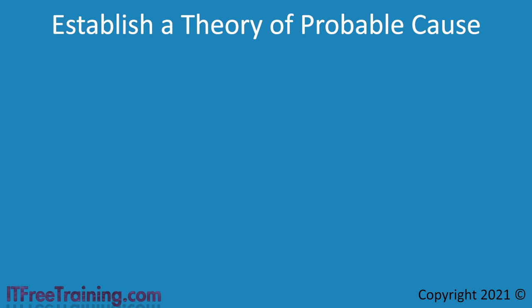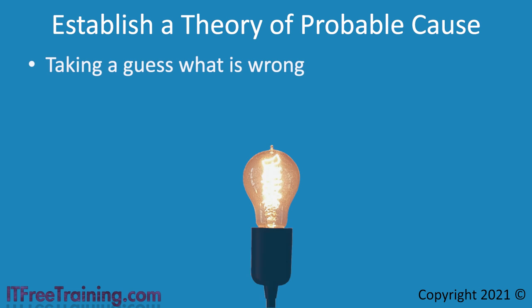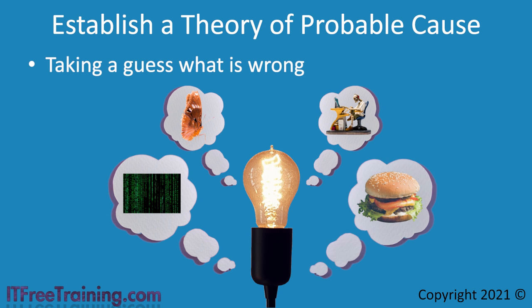The next step is to establish a theory for the probable cause of the problem — essentially, taking a guess at what is wrong. Consider the symptoms: for example, the user says the computer has started running slowly, probably caused by something having changed. This may be a hardware problem — have a look for damaged or broken cables, or open the computer and check for damage. If there is a large amount of heat inside, probably one of the fans has stopped working. Use all your main senses: listen for clicking noises, and note any electrical smell, which indicates something is damaged or shorting out.